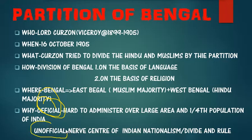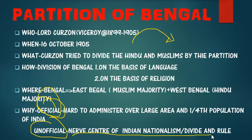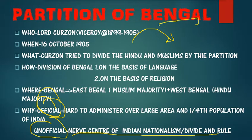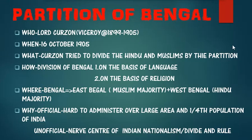The unofficial reason — the real back-end force for this partition — was that Bengal was the nerve center of Indian nationalists. All nationalist and revolutionary activities, like the formation of Congress and events such as the Battle of Plassey, were happening in Bengal only. That is why the British tried to divide Bengal so that they could rule India more effectively. This is all under the policy of divide and rule.